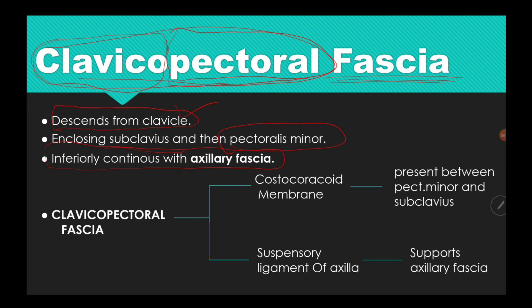The clavipectoral fascia can be classified into two types: the first is the costocoracoid membrane, and the second is the suspensory ligament of the axilla. The costocoracoid membrane is the superior part of the clavipectoral fascia, and the suspensory ligament is the inferior part.